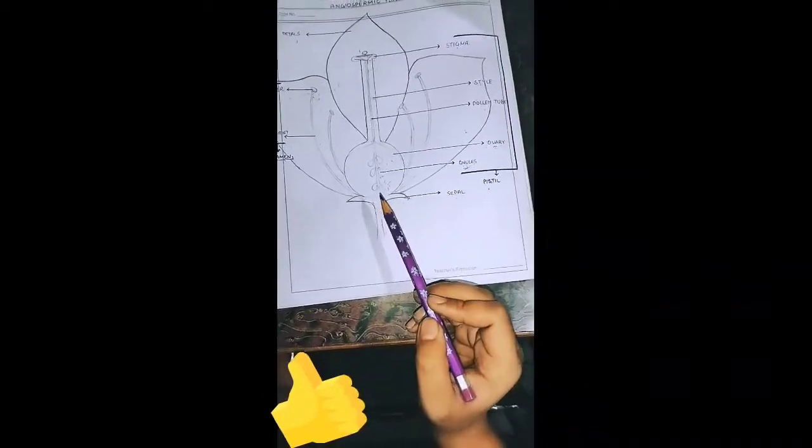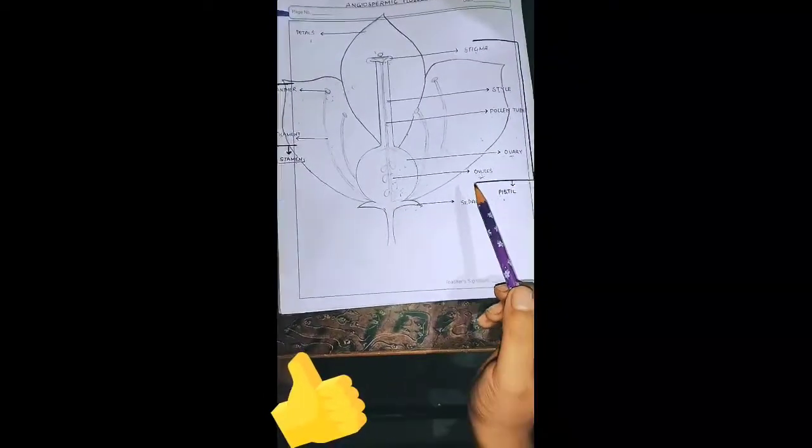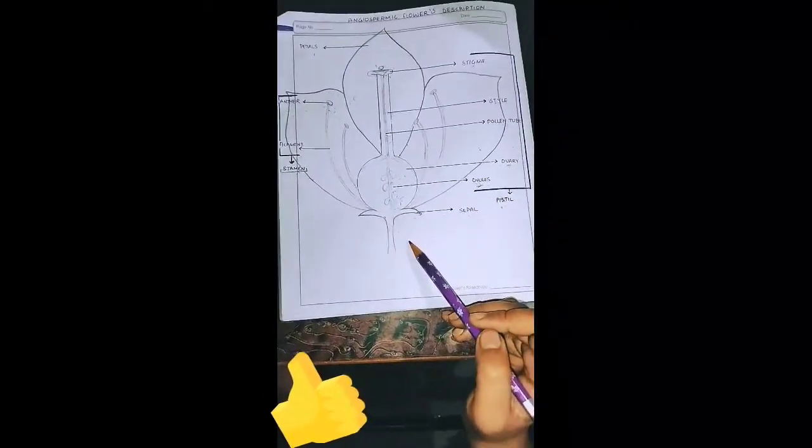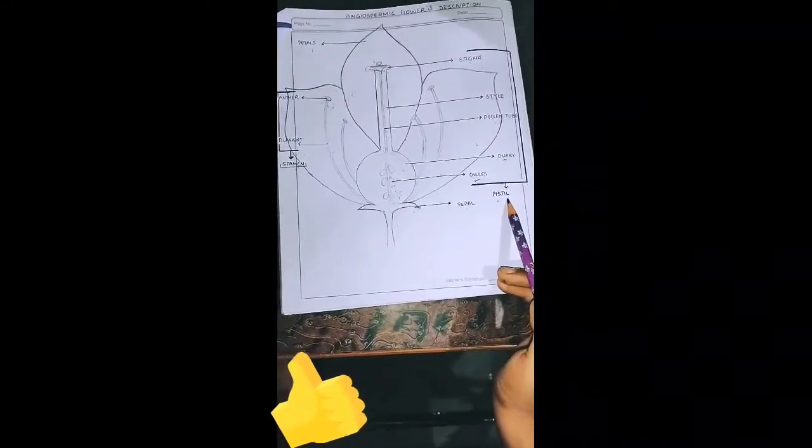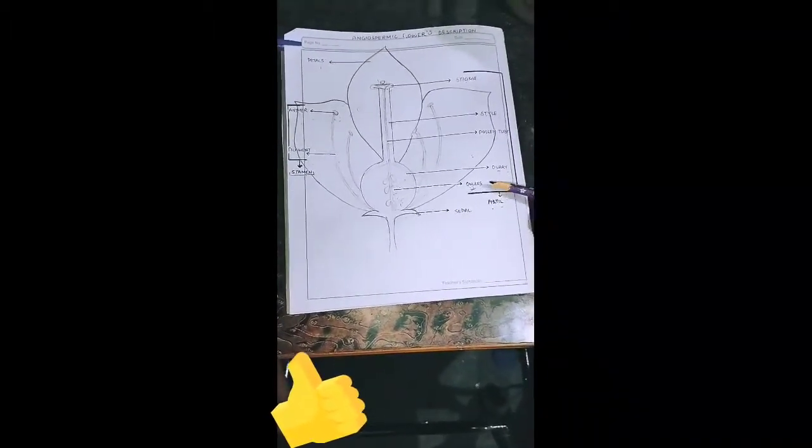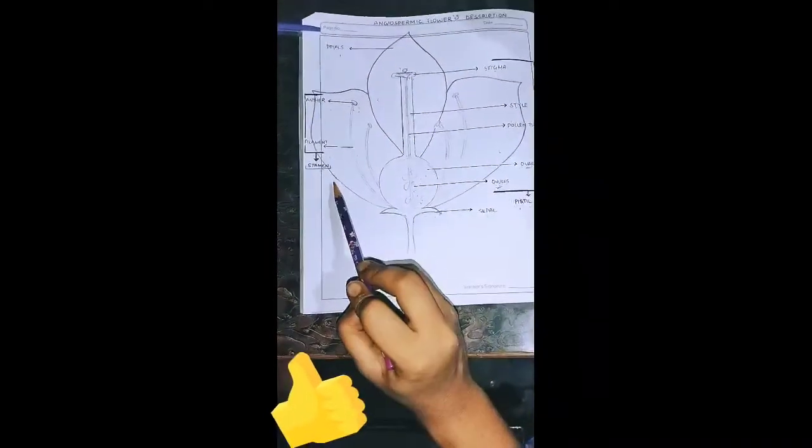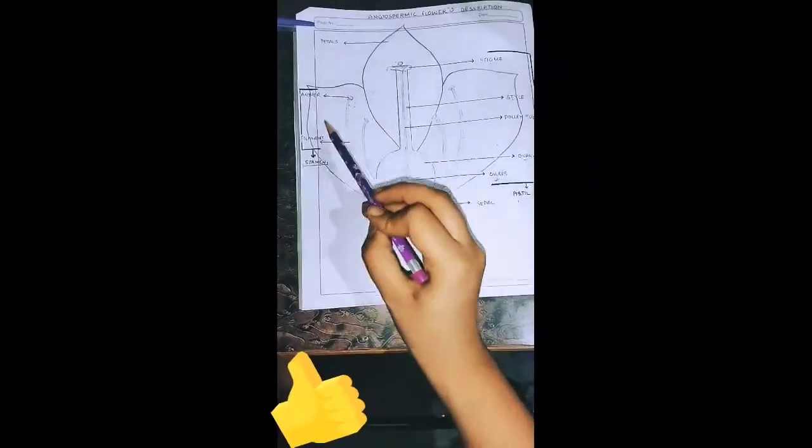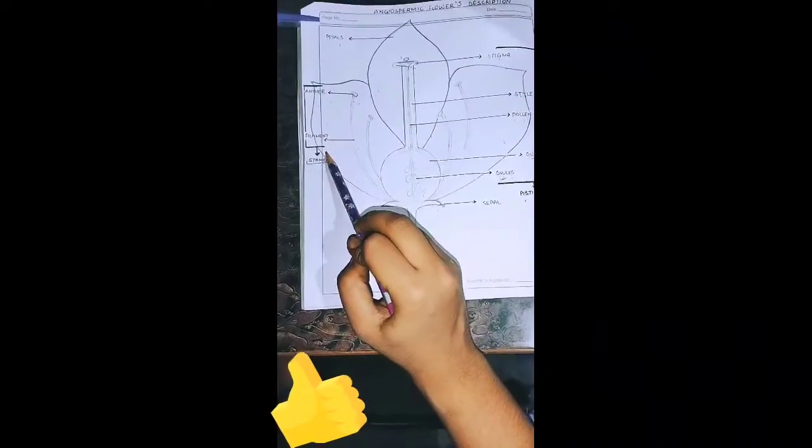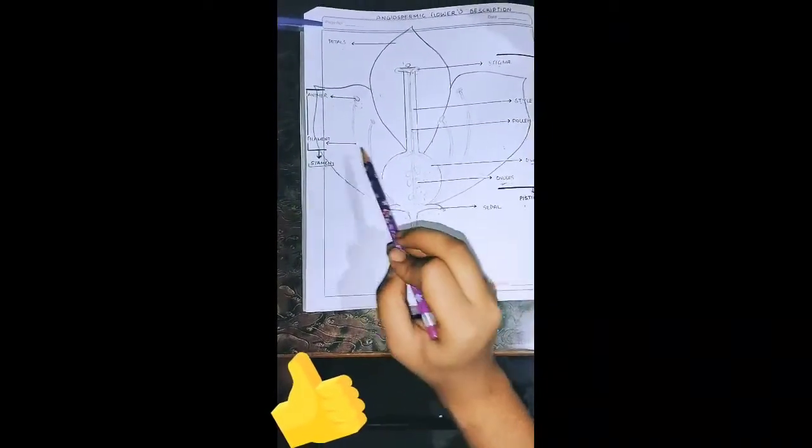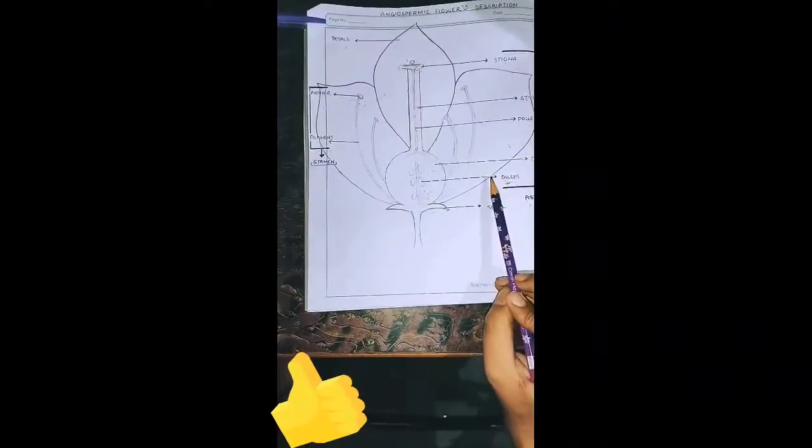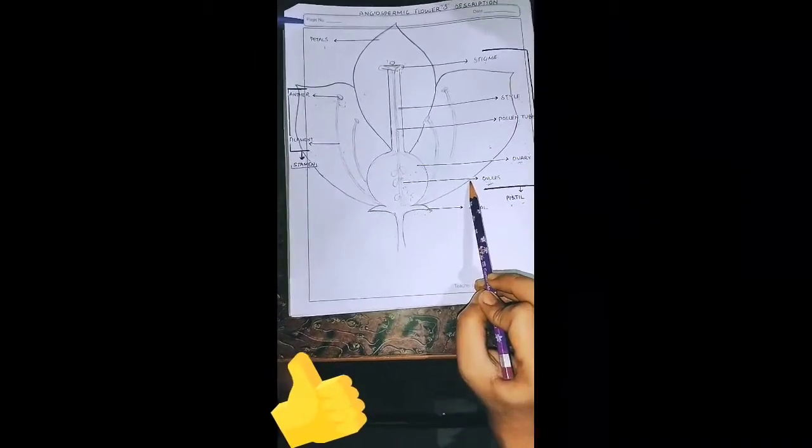So these are all our parts. Let's do a quick revision. Female reproductive part we call pistil, which is made of stigma, style, pollen tube, ovary and ovule. Male reproductive part we call stamen, which is made of anther and filament. The female reproductive part has ovules within which female gametes are present.